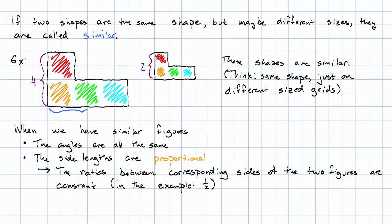Here's a side of the big figure—it's six units long. Here's the corresponding side of the little figure—it's three units long. In general, we can take any side of the big figure, multiply its length by a half, and get the length of the side of the little figure.